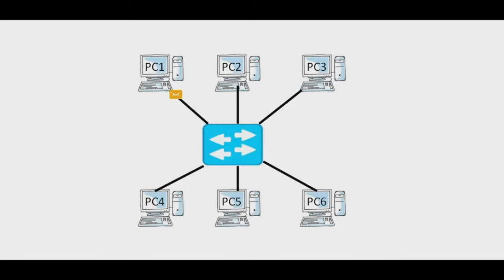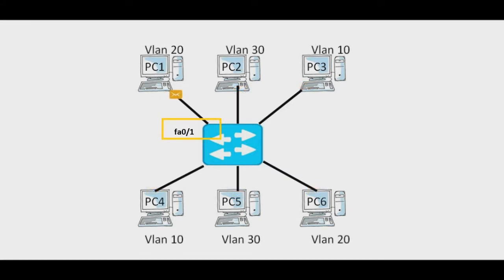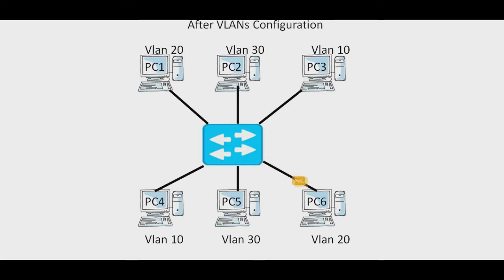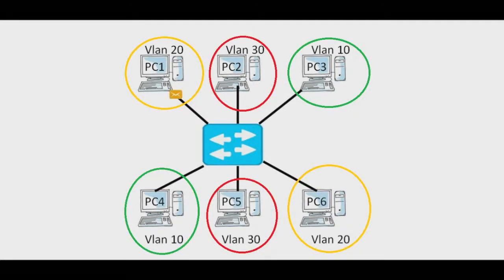Let's take an example to understand VLANs. Six PCs are connected to one single switch. A broadcast sent from host PC1 would reach all devices on the network. By placing interfaces FastEthernet 0/1 and FastEthernet 0/3 in a separate VLAN 20, a broadcast from host PC1 would reach only host PC6, since each VLAN is a separate broadcast domain.